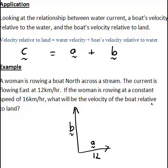If the woman is rowing at a constant speed of 16 kilometres per hour, what will be the velocity of the boat relative to land? Rowing at 16, that's the magnitude of this vector B, which is representing velocity relative to water. So that is 16.